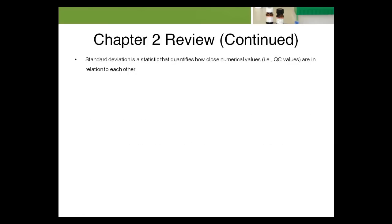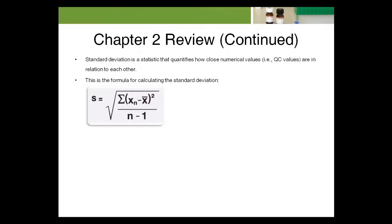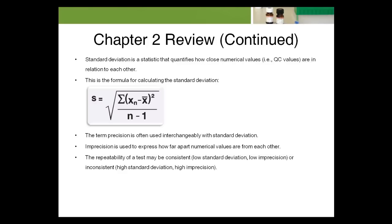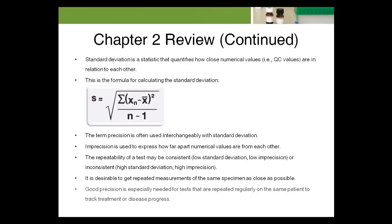Standard deviation is a statistic that quantifies how close numerical values — i.e., QC values — are in relation to each other. The term precision is often used interchangeably with standard deviation. Imprecision is used to express how far apart numerical values are from each other. The repeatability of a test may be consistent — low standard deviation, low imprecision — or inconsistent — high standard deviation, high imprecision. It's desirable to get repeated measurements of the same specimen as close as possible. Good precision is especially needed for tests that are repeated regularly on the same patient to track treatment or disease progress.